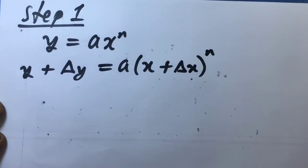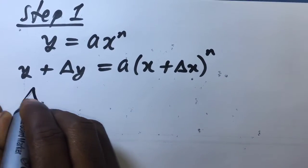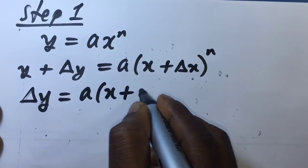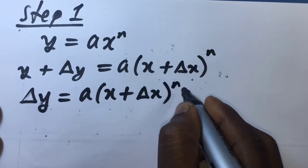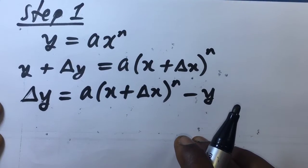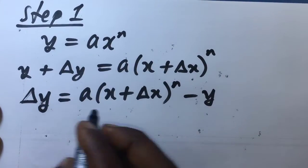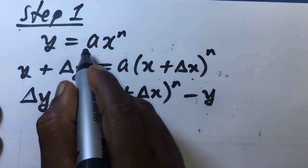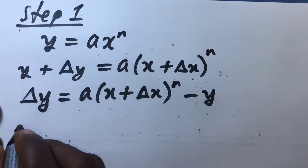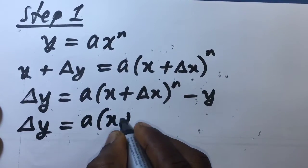If you make delta y the subject of the formula, then this will give you a(x + Δx) raised to the power n, minus y. But we've been given y to be ax raised to the power n, so in place of y we substitute ax raised to the power n, giving us that expression.